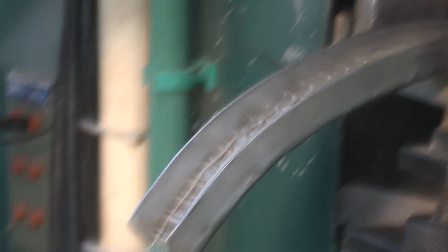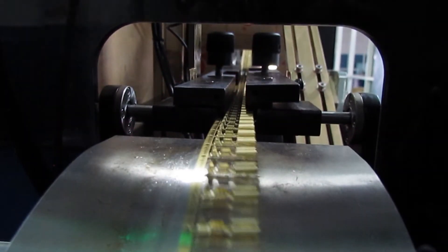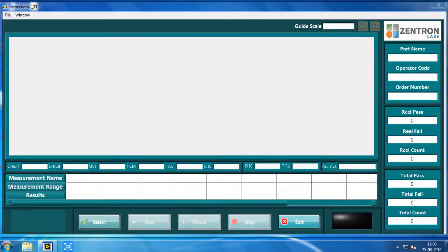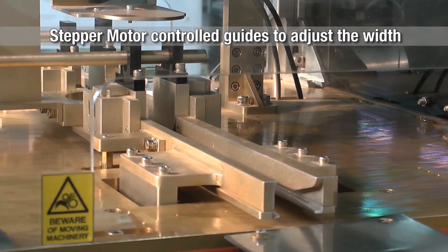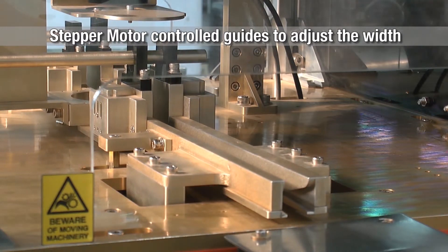Terminals coming directly from stamping are fed manually into the vision system. Operator selects the terminal type and accordingly the motorized jaws get adjusted to the length of that specific terminal.